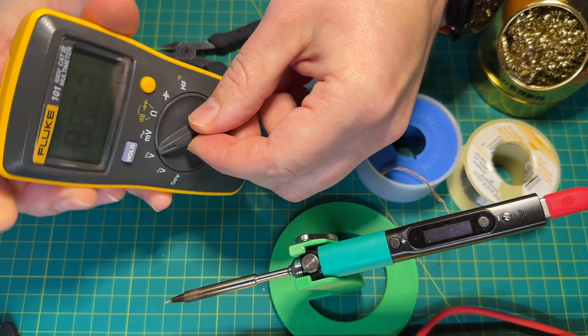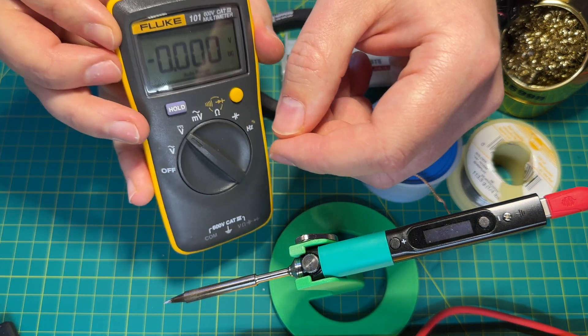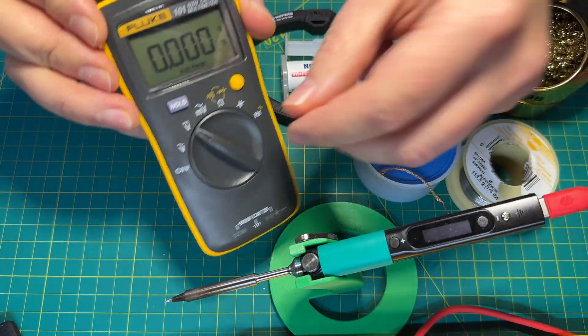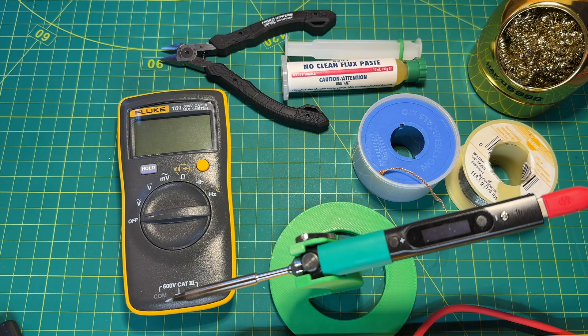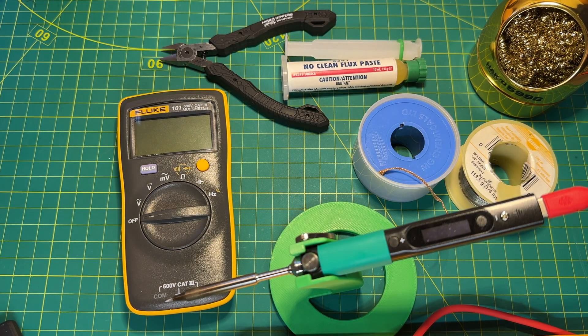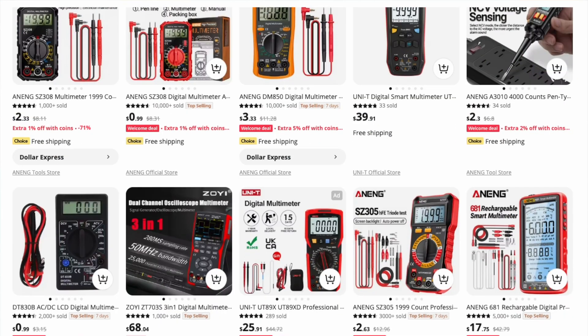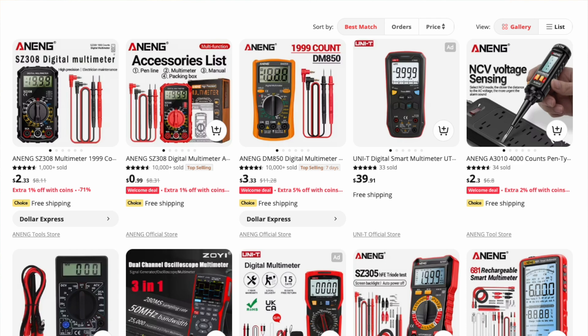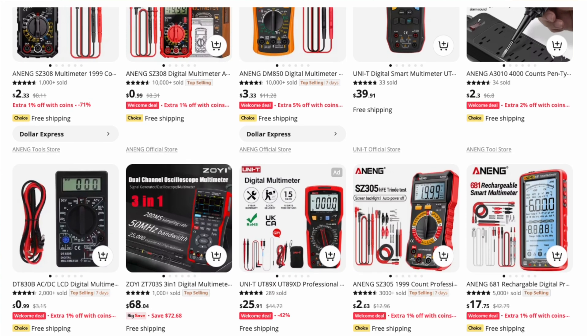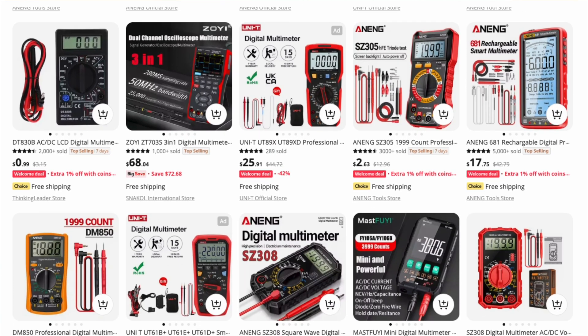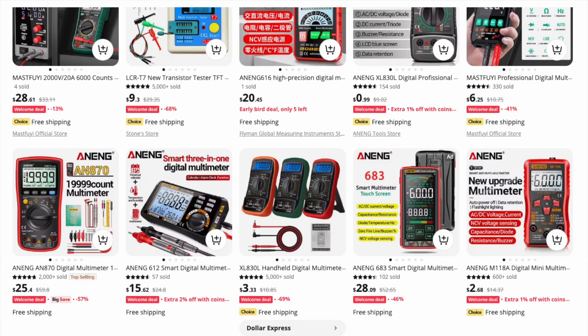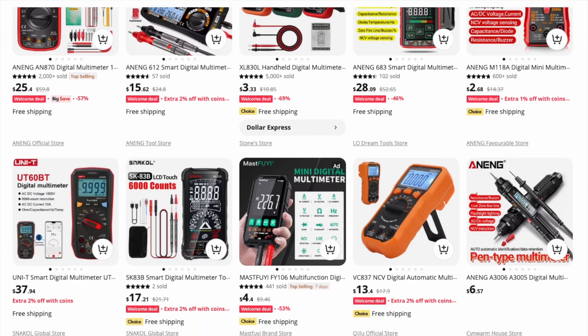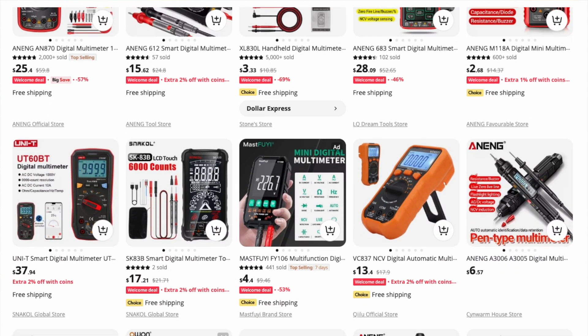So first thing you will probably need is a multimeter. Now this is a very good multimeter from Fluke, it's one of the reputable brands, but you don't necessarily need to start with the high-end stuff. Don't buy the cheapest multimeter you can find for like a dollar, because the issue with those is it's not even safety or quality or anything, it's more of a reliability. So how repeatable are your measurements, and can you rely on it to give you a more or less accurate reading?